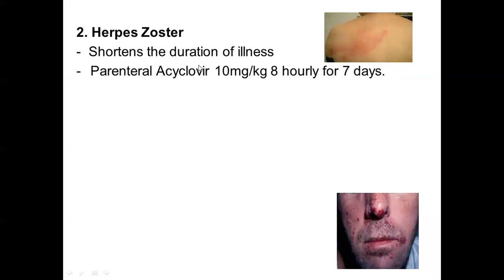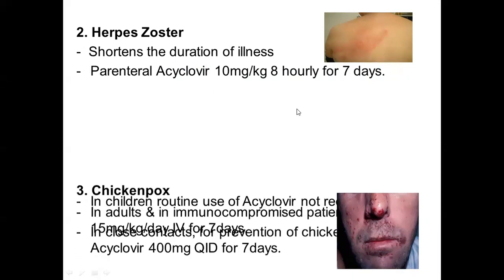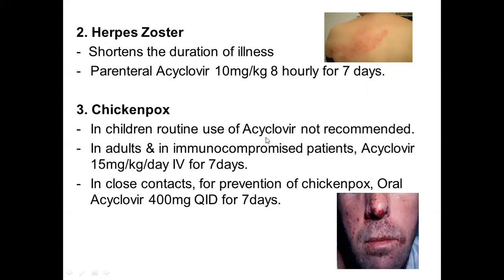Acyclovir is also useful for herpes zoster, where it shortens the duration of illness. Usually parenteral acyclovir 10 mg/kg eight hourly for seven days is given. For chickenpox, we do not usually use acyclovir in children. In adults and immunocompromised patients, acyclovir 15 mg/kg per day intravenously for seven days can be given. In close contacts of persons with chickenpox, acyclovir 400 mg four times a day for seven days can be given for prevention.